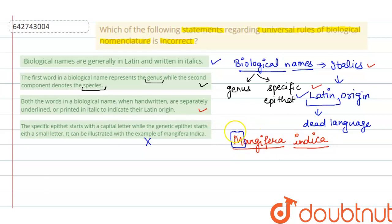the first letter of the first word, that is here M, should be capital. And the second word is species and its first letter should always be small. So what should be the correct statement here? That the specific epithet starts with a small letter while the generic epithet starts with a capital letter.